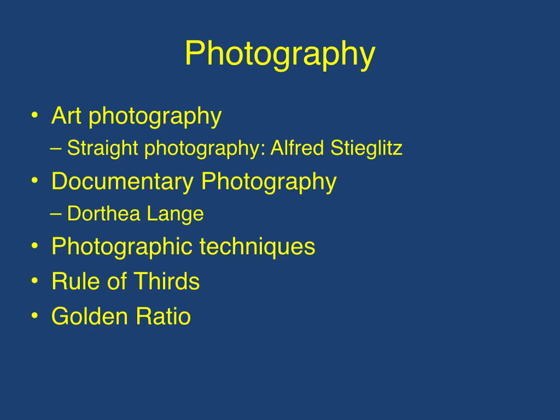Finally, we're going to look at photography. Man has always wanted to visually record his or her world — we can see this from the first paintings we've discovered, the cave paintings, where images were captured of everyday parts of life such as a hunt. We look at photography and assume it gives us information about the world, especially earlier photography, where the idea was that it actually captured the world as it was. Throughout this part of the lecture, we're going to look at different types of photography from straight photography developed by Alfred Stieglitz to documentary photography, and also discuss photographic techniques including the rule of thirds and the golden ratio.